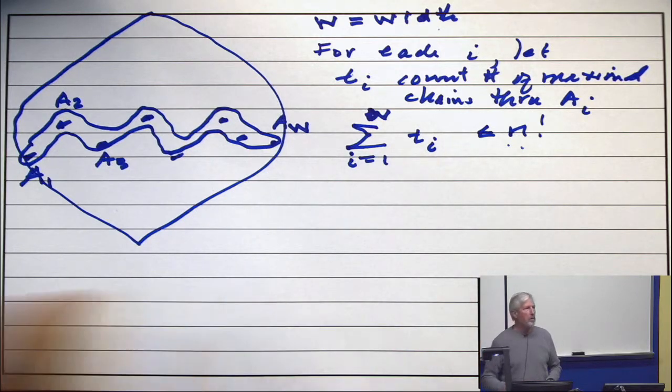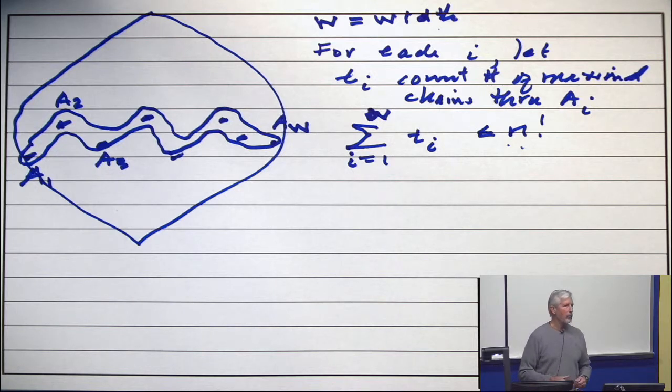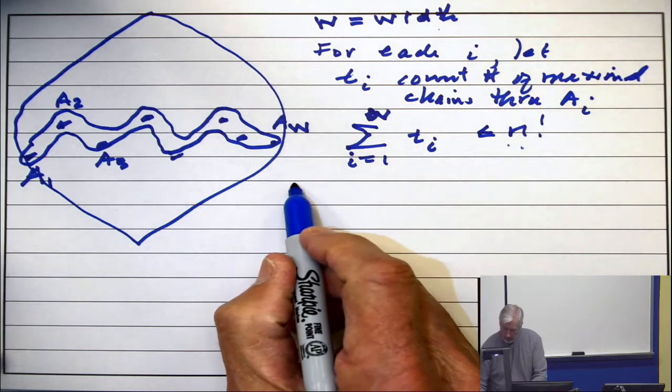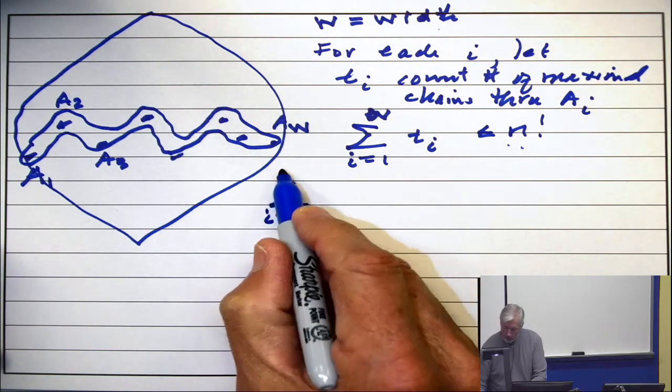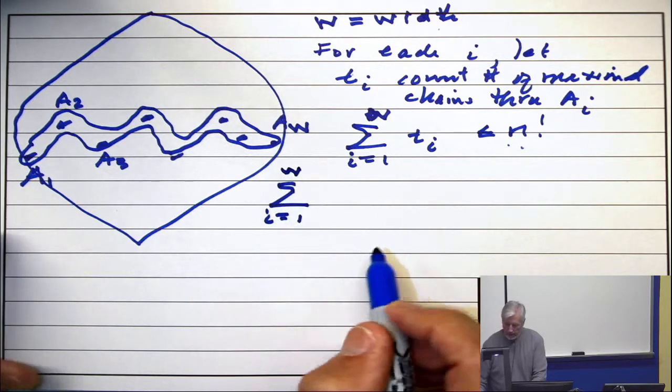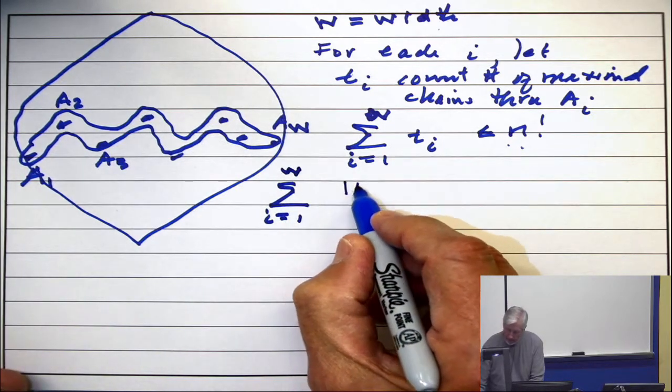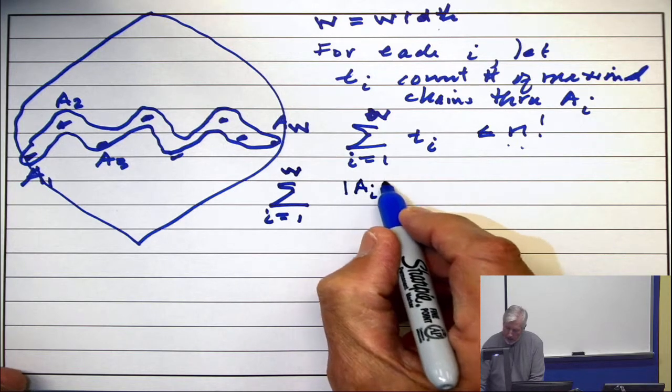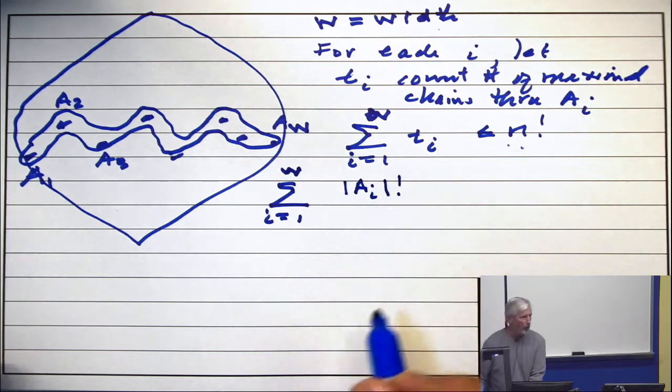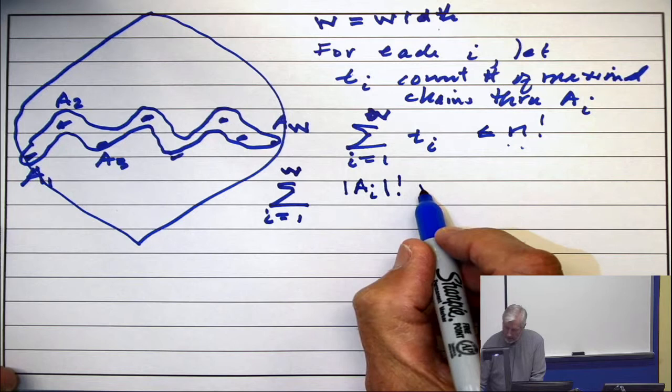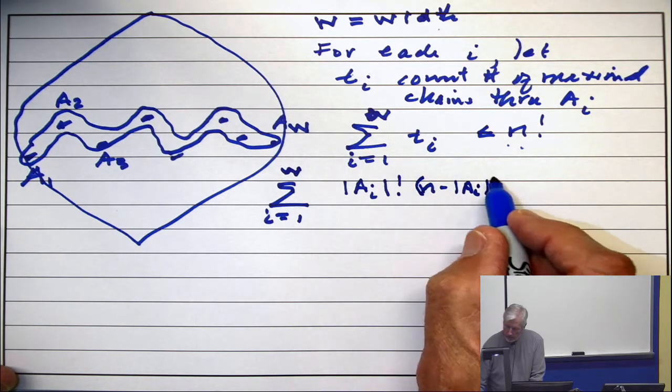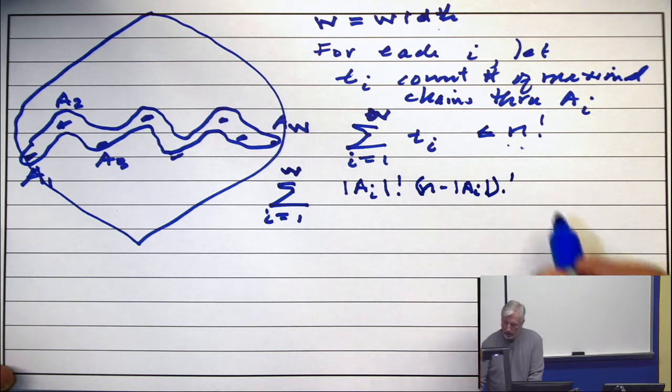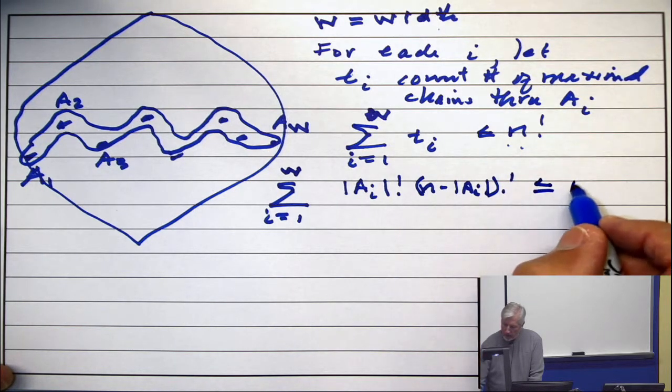Alright, now how many go through set AI? Well, it depends on how big the set AI is. We just did that. So this becomes the summation i equals 1 to W. Now, this is going to look a little messy. But if we just think about it, it's the size of AI factorial times n minus the size of AI factorial is less than or equal to n factorial.